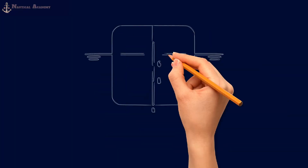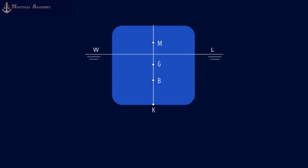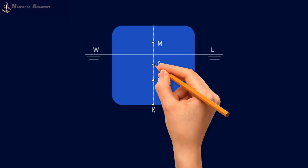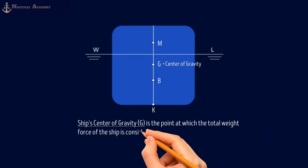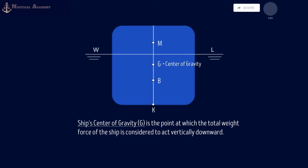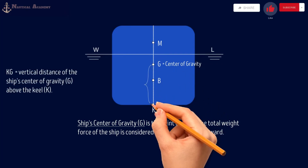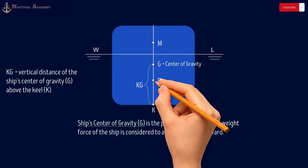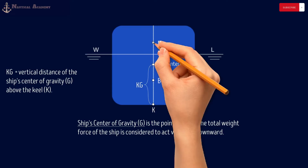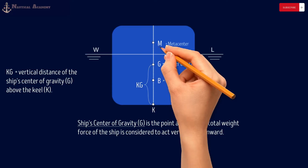If this is the ship's transverse section and this is the centerline, the center of gravity of a ship is usually denoted by capital letter G. It is the point at which the total weight force of the ship is considered to act vertically downward. Below G is the ship's center of buoyancy denoted as capital letter B, and the metacenter is denoted as capital letter M.